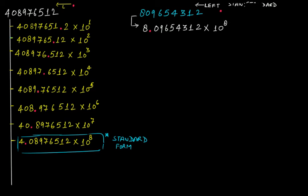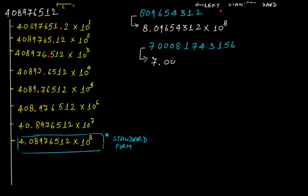Similarly, if your number is 70000817431​56, and I ask you to write this in standard form — by how many digits will the decimal point have moved towards the left? The decimal point finally comes after the 7, so counting: 1, 2, 3, 4, 5, 6, 7, 8, 9, 10, and 11 digits. So our number will be 7.000081743156 times 10 to the 11th power.